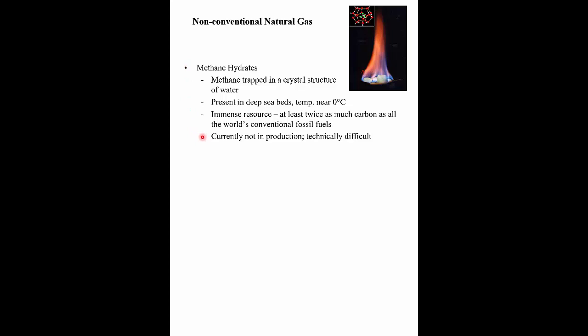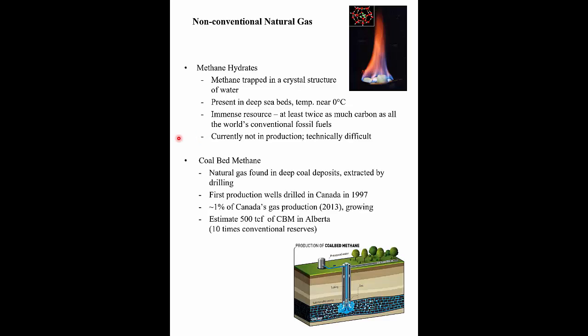There have been experiments to see how hard it is to produce methane hydrates, but it's currently not in production — it's technically too difficult given the cheap price of natural gas at the moment. There's also coal bed methane, which is being used right now even in Canada, representing about 1% of Canada's natural gas production in 2013. You drill into a coal seam — coal miners know that methane found with coal can be an explosion hazard — put a submersible pump down, and when you apply suction, the methane comes out of solution, giving you a supply of methane.